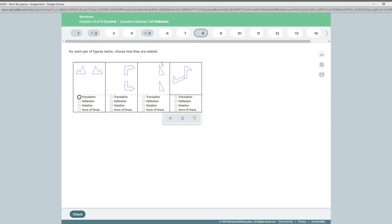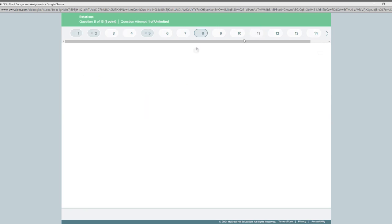So this is another one like we saw in number one. This first one looks like it would be like a reflection. This also looks like it would be a reflection across the x-axis. This looks like a translation, and this looks like some kind of a rotation.